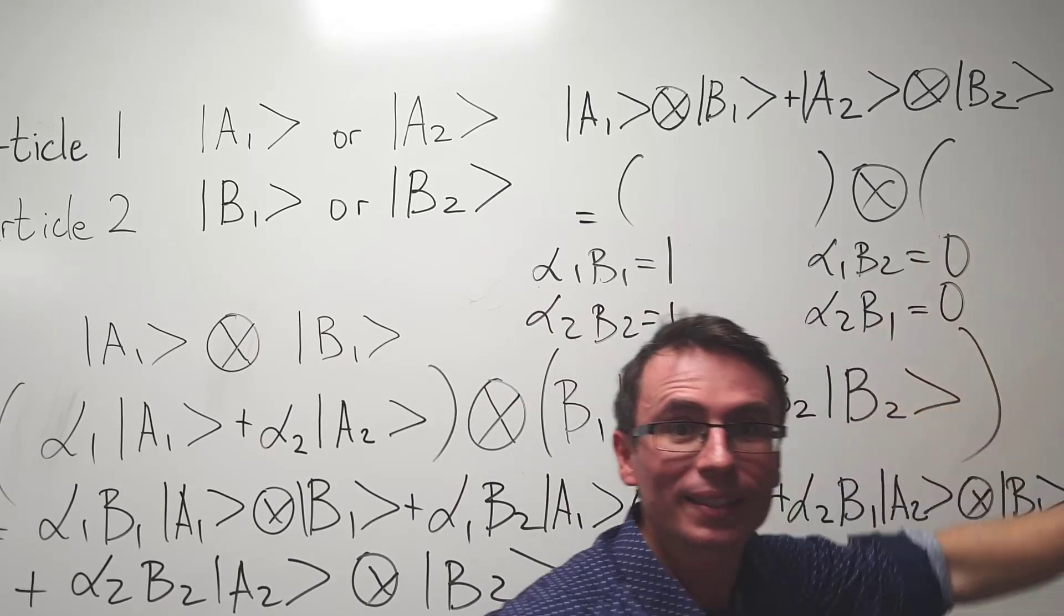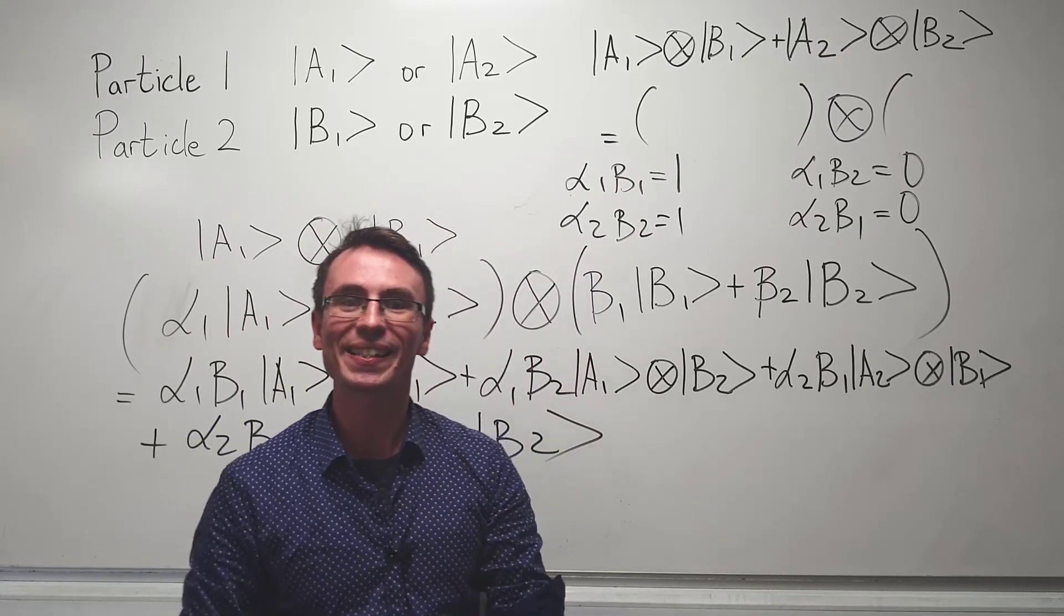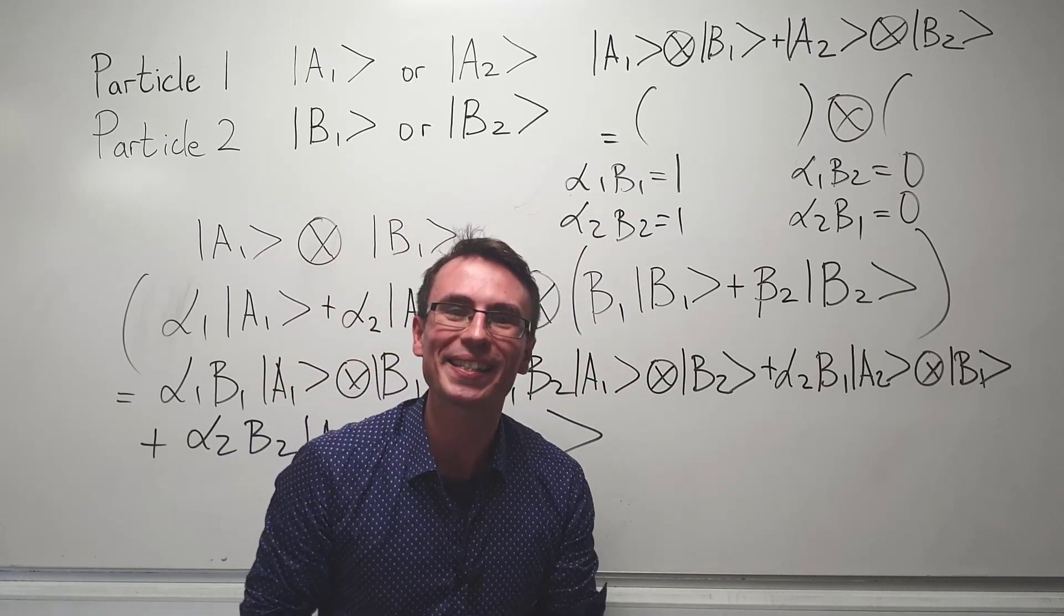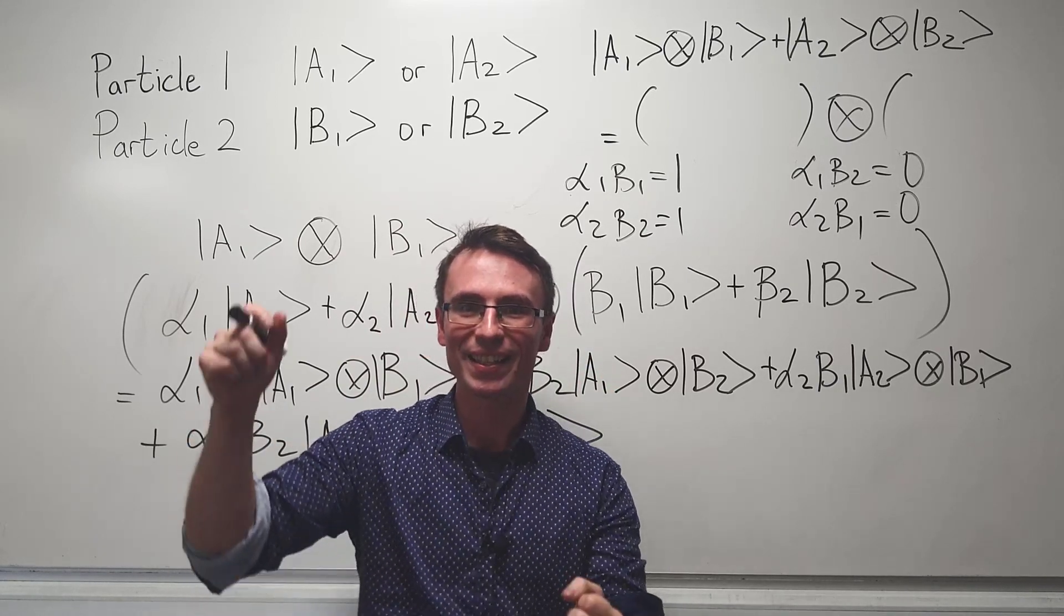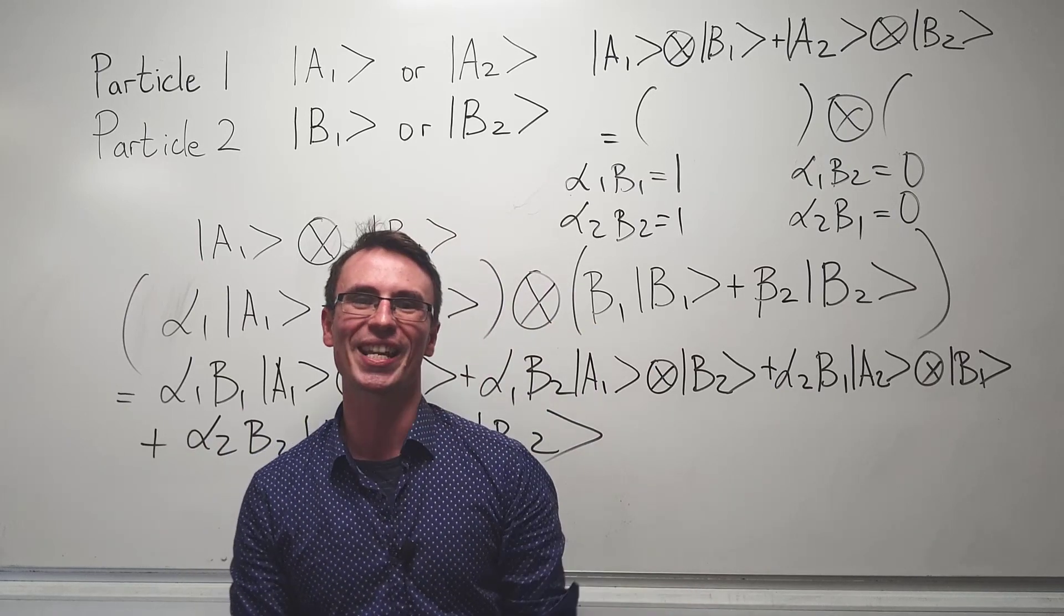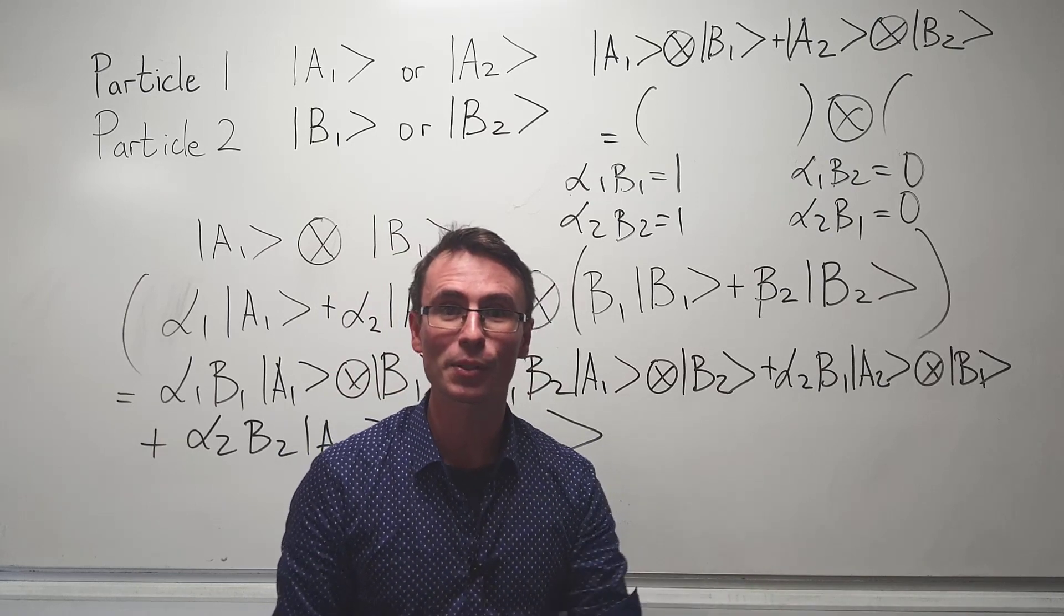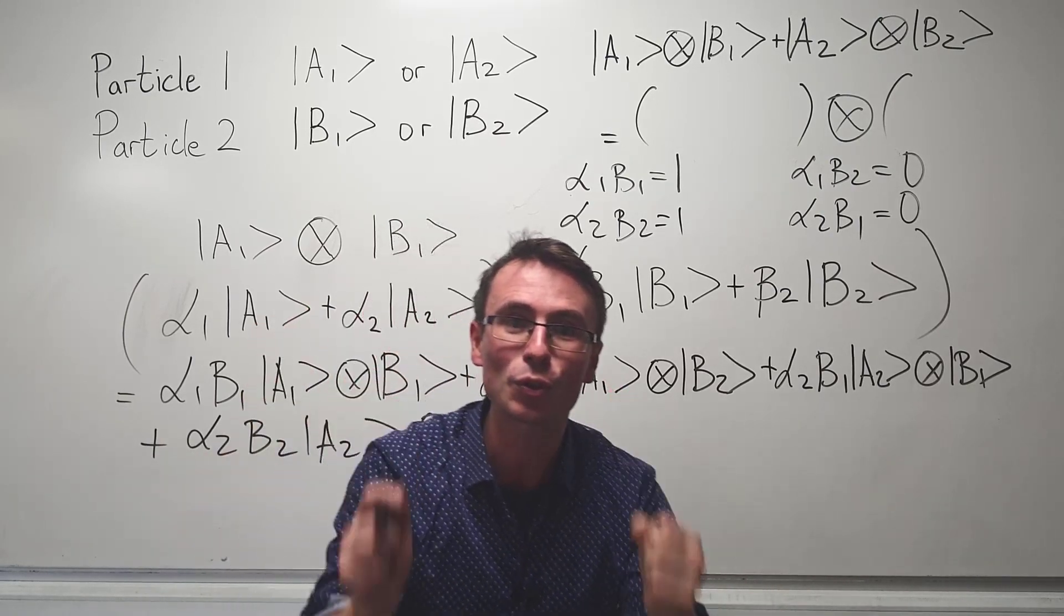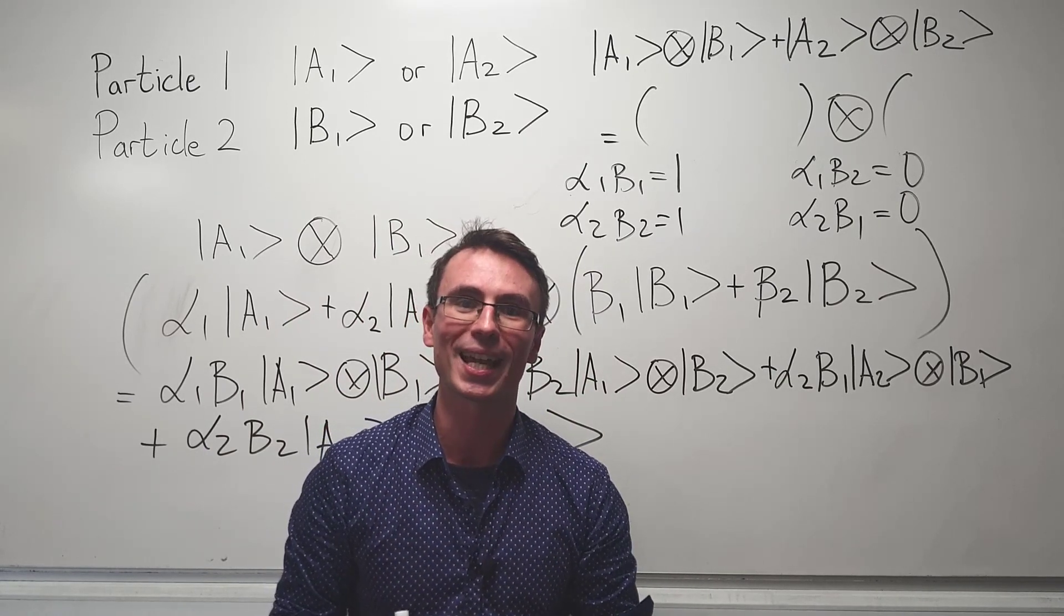Those two states are completely entangled and you can have these crazy experiments in which you separate two particles and then you make a measurement on one, instantly changing the state of the other. It doesn't really matter where it is, it could be 10,000 kilometers away, it could be on the other side of the universe. Those two states are fully interlinked due to the laws of quantum mechanics.